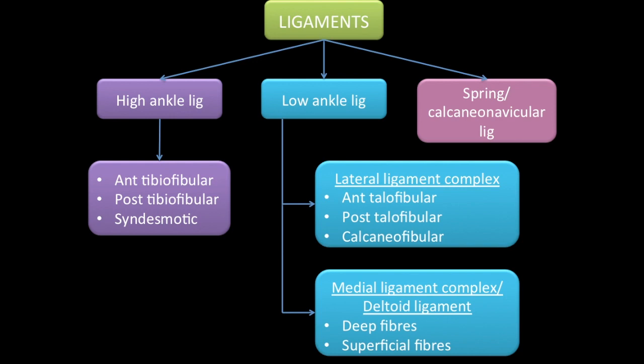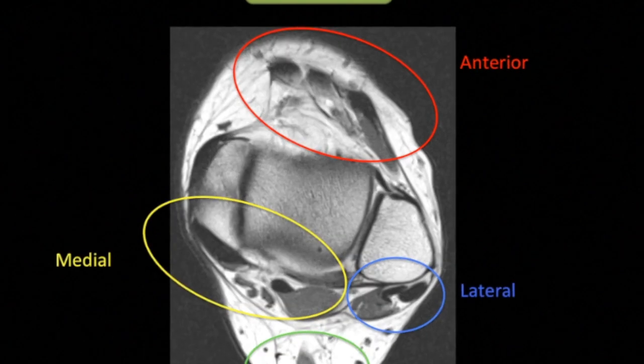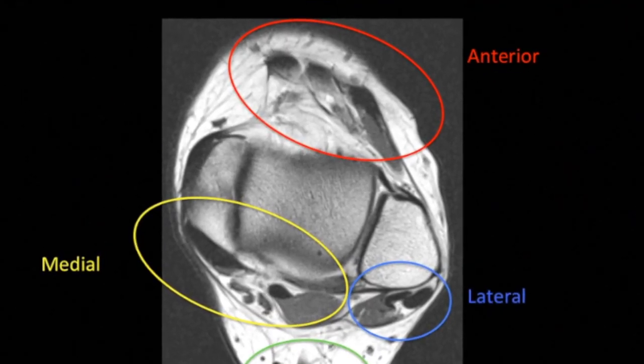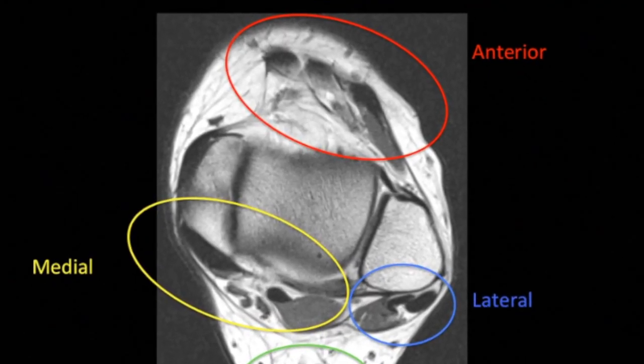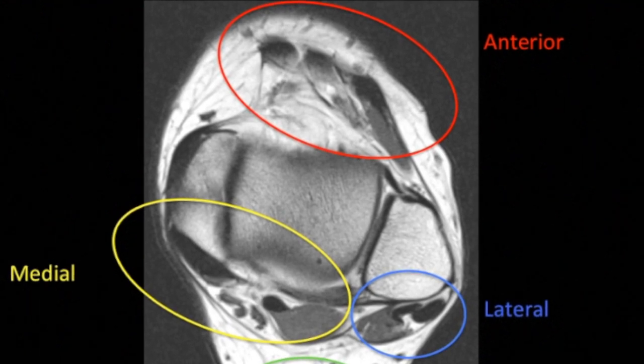Medially is the deltoid ligament which consists of deep and superficial fibers. Tendons can be divided into four compartments: anterior, medial, lateral, and posterior. Now we will look at all of these normal structures on a normal MRI scan in all three planes.